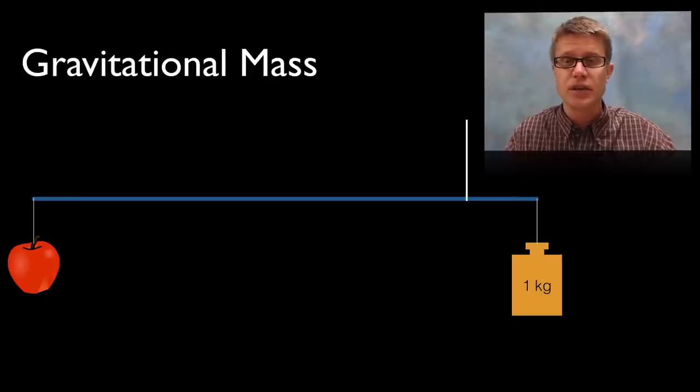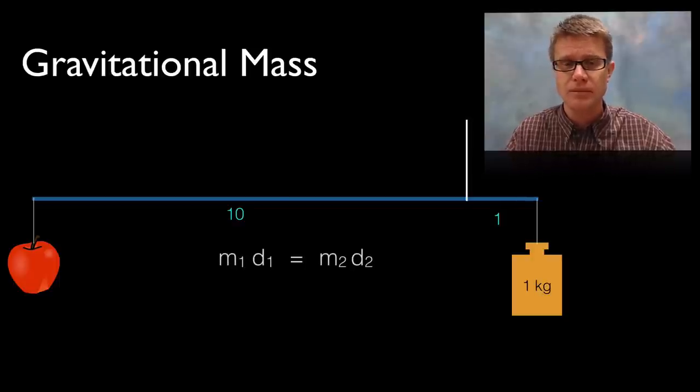The gravitational masses on either side of that pivot point are equal. And so it is easy to figure out the mass of the apple now. We just measure the distance, and the distance units are somewhat arbitrary. It could be in centimeters or inches. It doesn't matter as long as we are using the same units on each side.